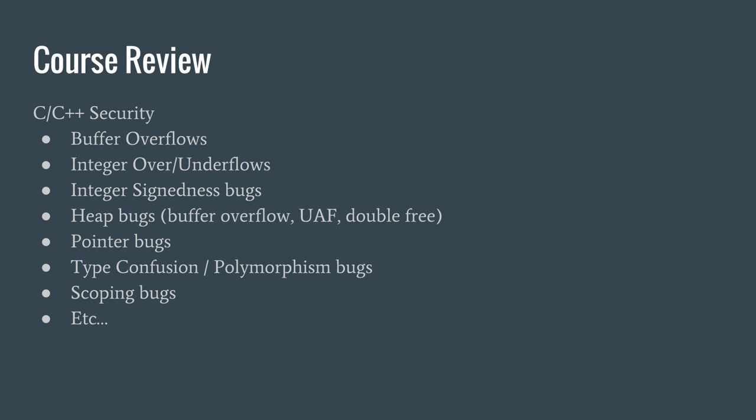Then we dived into C and C++ security, discussing vulnerabilities and all the different types, covering buffer overflows for stack and heap, integer bugs — especially integer sidedness bugs — heap bugs including use-after-free and double free pointer bugs, scoping bugs, type confusion, polymorphism bugs, race conditions, etc.